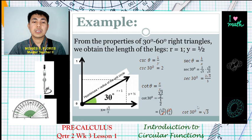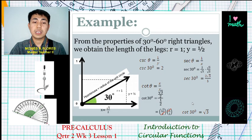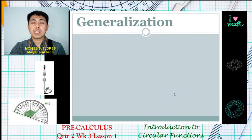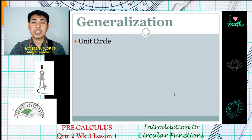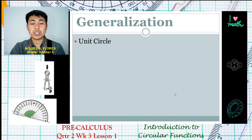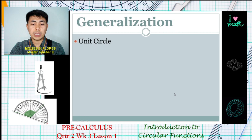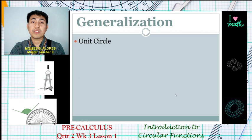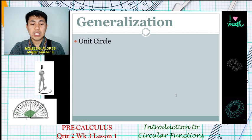So these are the six trigonometric function values for the given angle of 30 degrees. Let us generalize what we have discussed today. The unit circle is a circle with a radius of 1 unit, centered at the origin of a coordinate plane, with the standard equation x² + y² = 1.